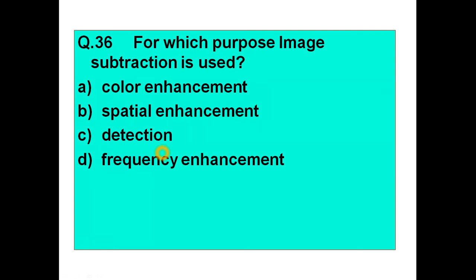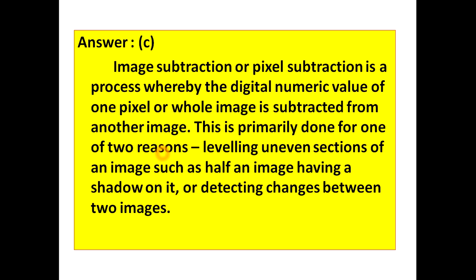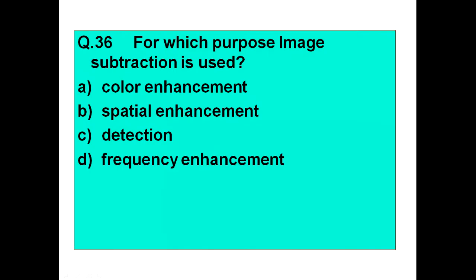We know that we use image subtraction for detection. Answer will be C. Image subtraction or pixel subtraction is a process whereby the digital numeric value of one pixel or whole image is subtracted from another image. This is primarily done for one of two reasons: first, leveling uneven sections of an image such as half an image having a shadow on it, or detecting changes between two images. Detecting changes between two images is one of the motives of doing this image subtraction.